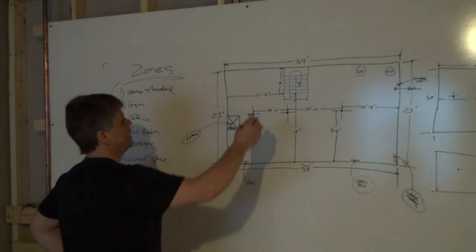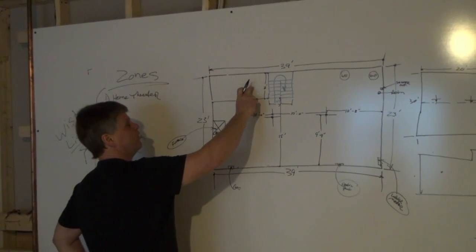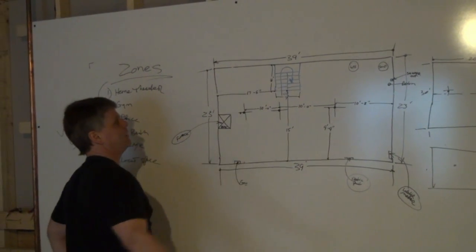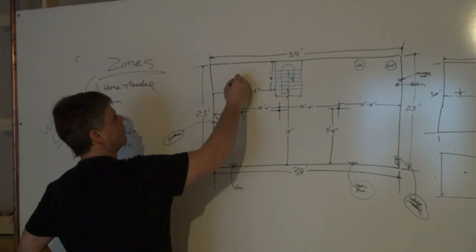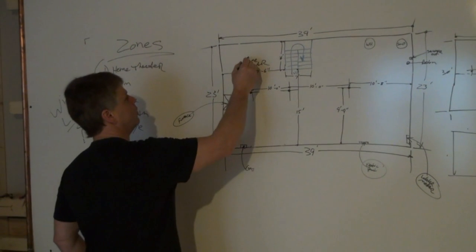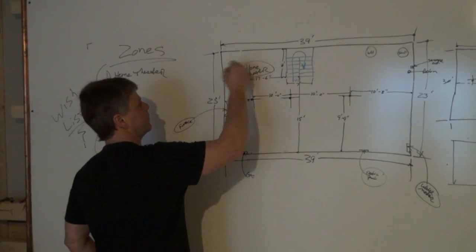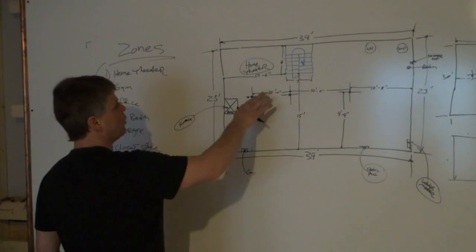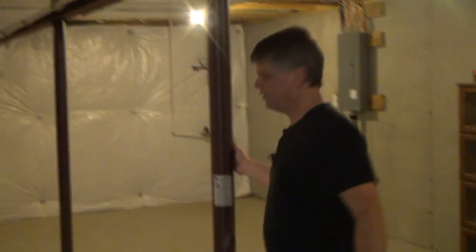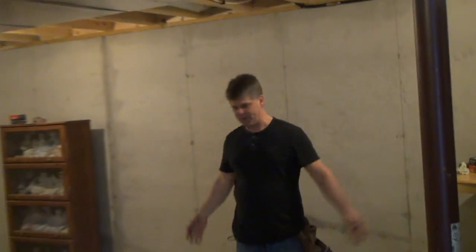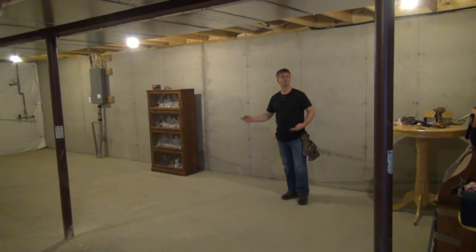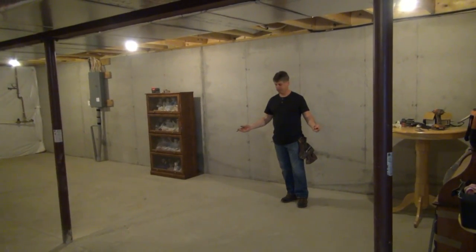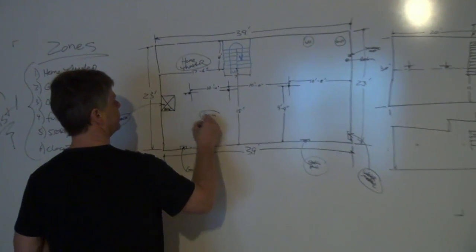Let's start with the home theater. The home theater was over here at the bottom of the steps in this area, so we're going to go ahead and label this area first: home theater. Over on this side, past the two columns, between this column and this column, over in this open area right here, we thought would be a nice place for a home gym, an exercise area. Let's just put gym.